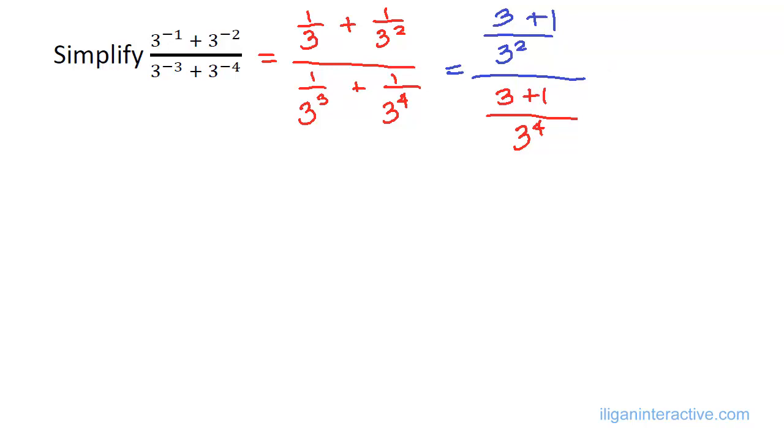This will be 4 over 3 squared all over 4 over 3 to the 4th. Now, as you notice, I don't simplify the 3 to the 4th into a whole number because I think this will just cancel out later.